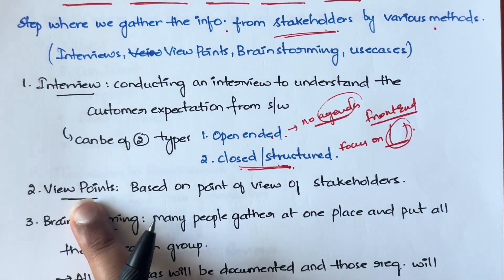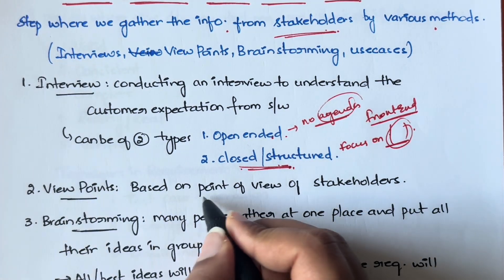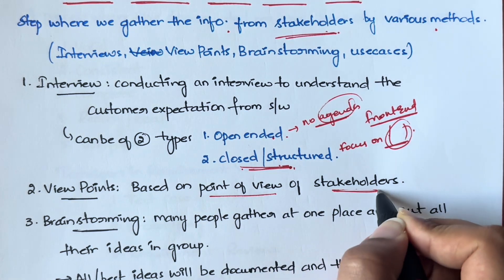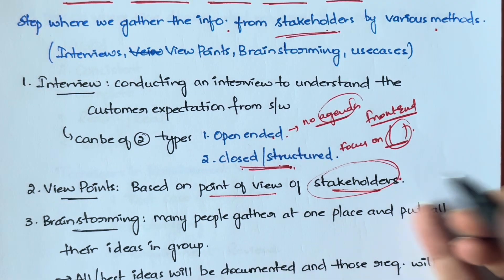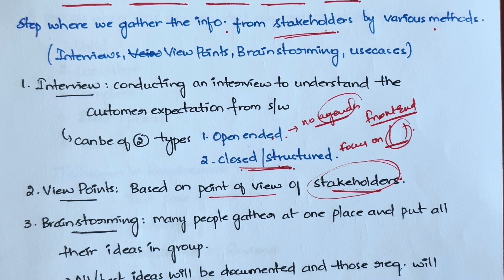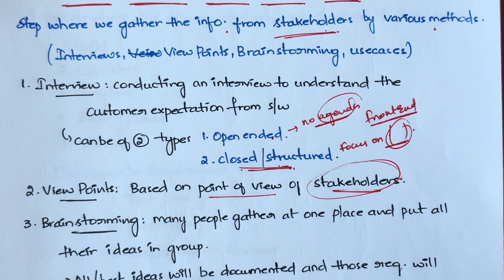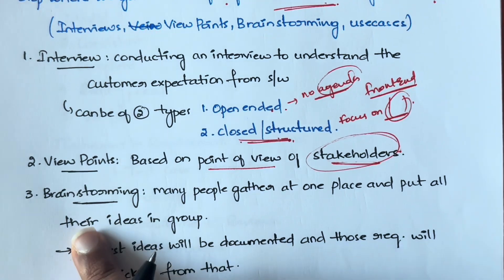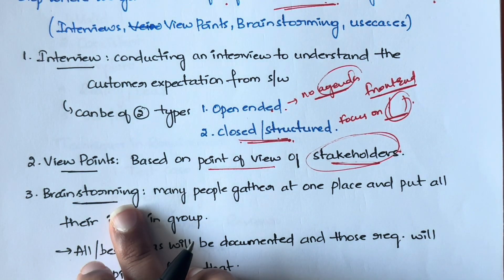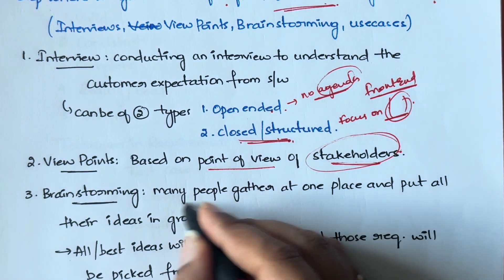Next is viewpoints. A viewpoint is based on the point of view of the stakeholders. The customer will have a different point of view about the project, the developer will have a different one, and the testing team will have a different one. Different people have different points of view. You collect all their viewpoints and come up with something from that.